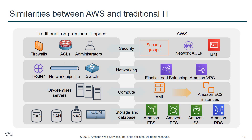Now in the compute section we can see that AWS AMI and Amazon EC2 instances are equivalent to on-premises servers.